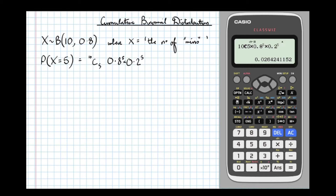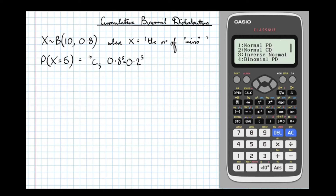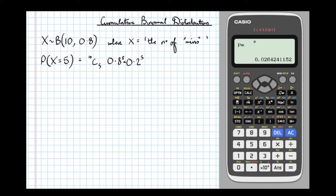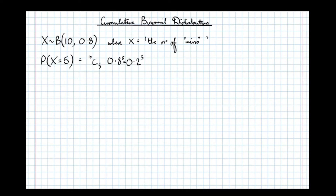However, there is, in my opinion, a better way of doing that, using the distribution mode on the calculator. So we go to distribution mode, binomial PD — binomial probability distribution variable. The number of wins was 5, the number of trials was 10, and the probability of winning was 0.8, which gives us exactly the same answer: 0.0264 equals 0.0264.